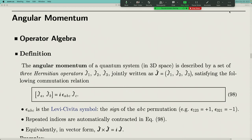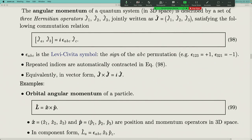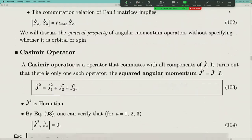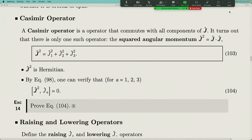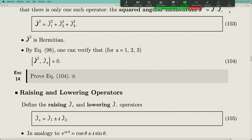In quantum mechanics, these three components get promoted into three observables or operators — Hermitian operators J₁, J₂, and J₃ — such that the total angular momentum as a vector is J. These three component operators satisfy the commutation relation, which is the most important relationship that defines angular momentum. This definition applies to both orbital angular momentum and spin angular momentum as special cases. Starting from the angular momentum operator, one can write down a new operator — the sum of the squares of the components — called the Casimir operator, which commutes with any one of the angular momentum components.